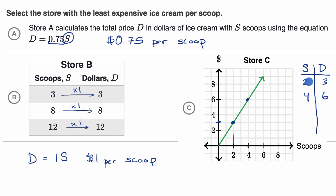So it looks like I'm multiplying times 1.5 to go from scoops to dollars. Or another way you could think about it is, the dollars is equal to 1.5 times the scoops. Or another way to think about it, at store C, they're charging $1.50 per scoop. So store C is the most expensive, followed by B, and then store A is the cheapest. And that's what they're asking us. The least expensive ice cream per scoop is store A.